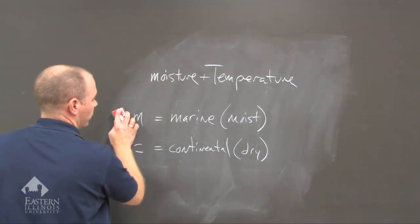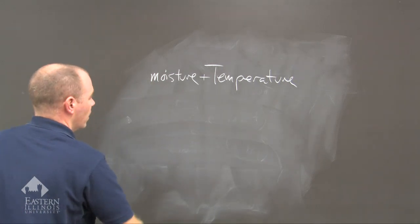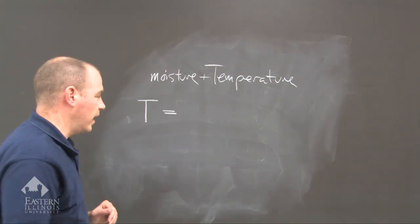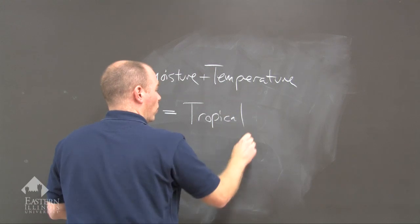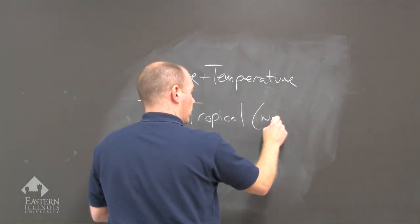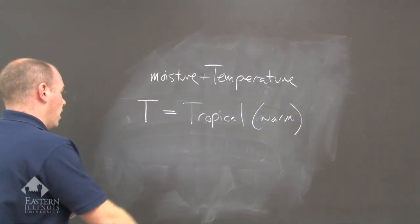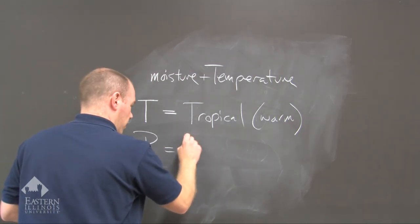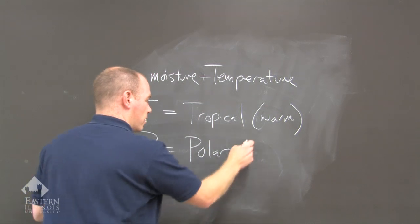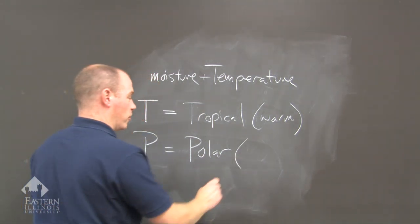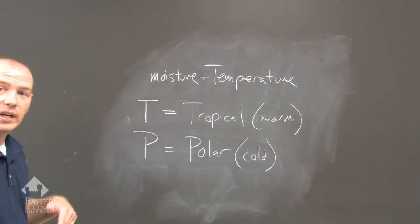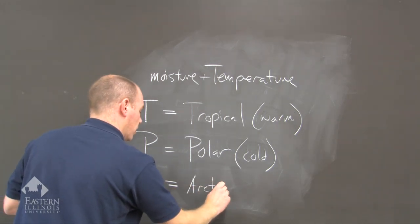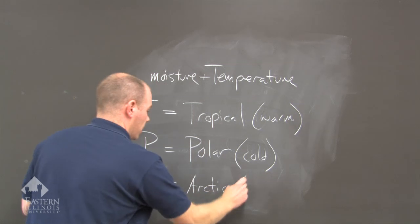Now we'll add temperature. A capital 'T' after moisture indicates a tropical air mass, which is warm. If you have a capital 'P' behind the moisture abbreviation, you get the polar air mass, which indicates a relative temperature of cold. And then there's a third one — capital 'A' — which is arctic, a very cold air mass.